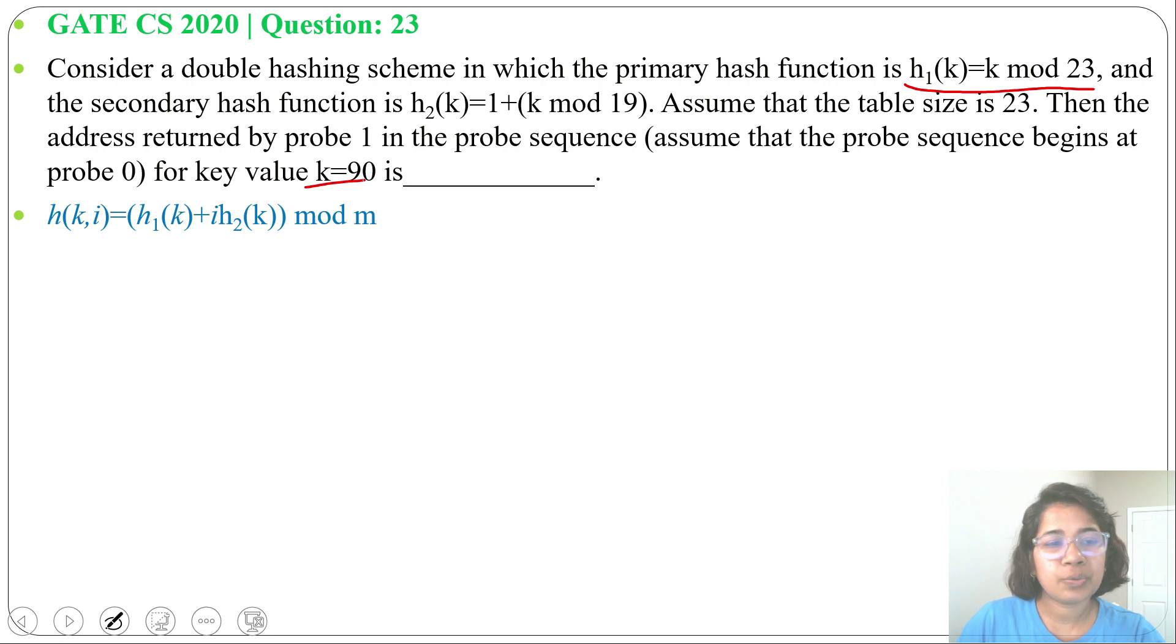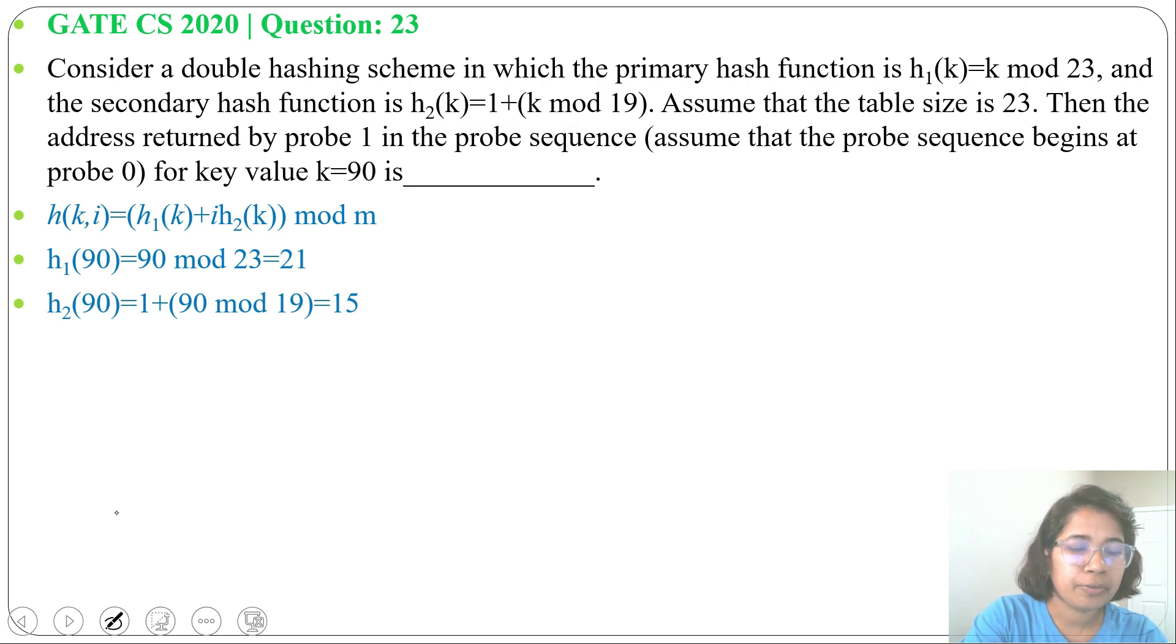So h1(90) will be 90 mod 23 is 21. Next h2(k) = 1 + (k mod 19). So h2(90) = 1 + (90 mod 19) = 15.